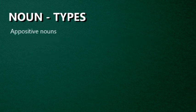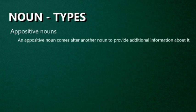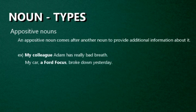Next one: Appositive Nouns. An appositive noun is a noun that comes after another noun to provide additional information about it. If the appositive provides essential information, it is written without extra punctuation. If it provides extra information that is not essential, it is surrounded by commas. For example: My colleague Adam has really bad breath — my colleague is the appositive noun. In the next sentence: My car, a Ford Focus, broke down instead — the actual sentence is my car broke down, and a Ford Focus is additional non-essential information surrounded by commas, so Ford Focus is the appositive noun.